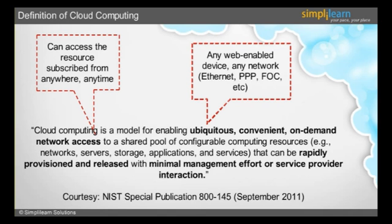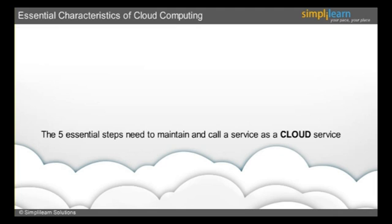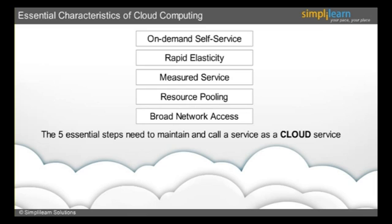In the next slide, we will discuss essential characteristics of cloud computing. NIST states that there are five essential characteristics which are achieved by the service providers so that they can call their service a cloud service. The five essential characteristics are on-demand self-service, rapid elasticity, measured service, resource pooling, and broad network access.